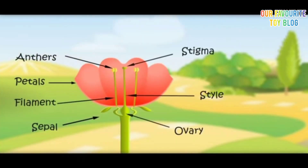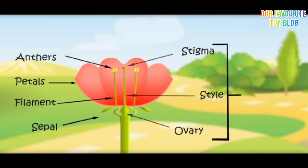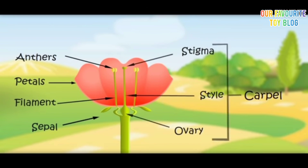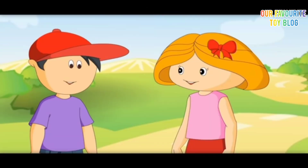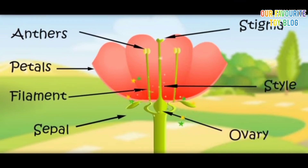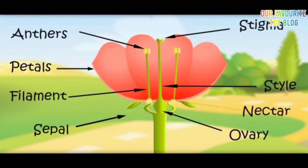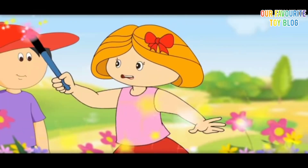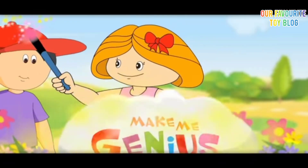The female parts are stigma, style, and ovary. I know — all these female parts are called the carpel. You are right! Also put nectar here. Oh, I forgot — here it comes.